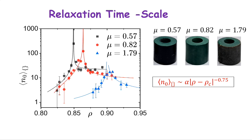You can tune the relaxation timescale by changing friction. With low friction (mu = 0.52, Teflon-coated particles), you get the sharpest transition at the lowest density. With uncoated rubber particles (mu = 0.82), the transition point shifts higher. With very high friction (sandpaper grid), the transition is almost killed. As friction increases, the transition shifts from left to right and becomes increasingly suppressed - friction is a stabilizing factor.